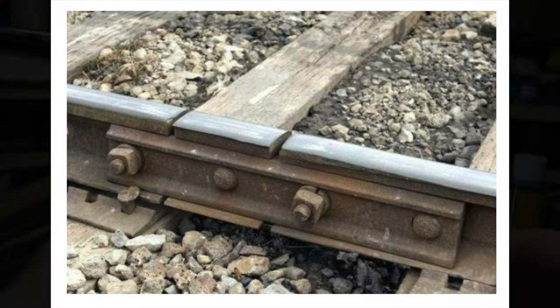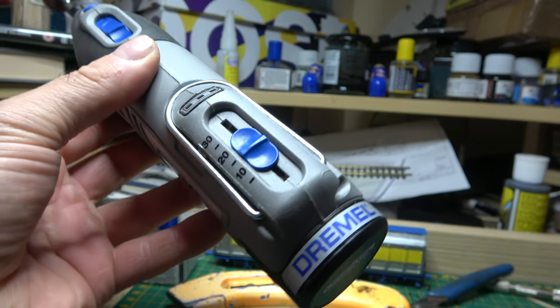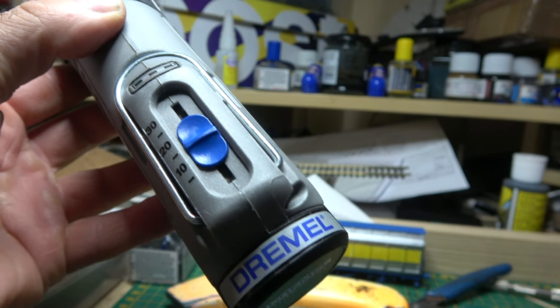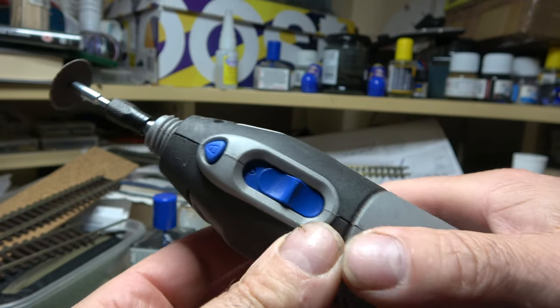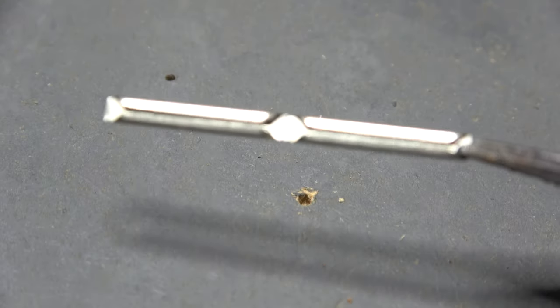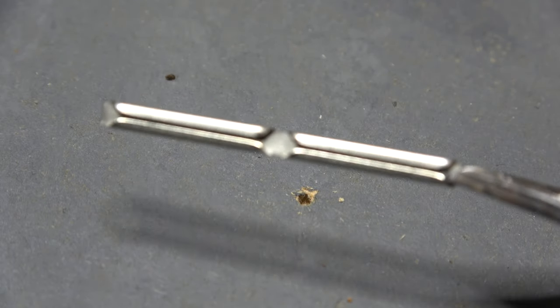My old Dremel died a dignified death a few days ago and I replaced it with a new cordless one. Now what I'm about to do you probably could do with some rail cutters, but you'll end up doing a lot of filing.